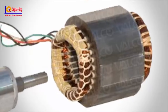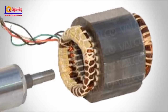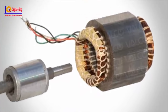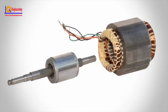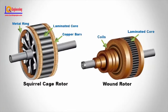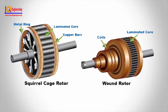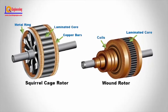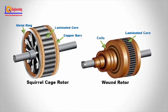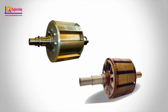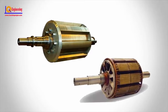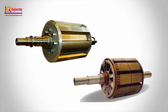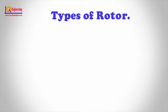Induction motors, generators, and alternators have an electromagnetic system consisting of a stator and rotor. There are two designs for the rotor in an induction motor: squirrel cage and wound. In generators and alternators, the rotor designs are salient pole or cylindrical. Here we discuss four types of rotor.